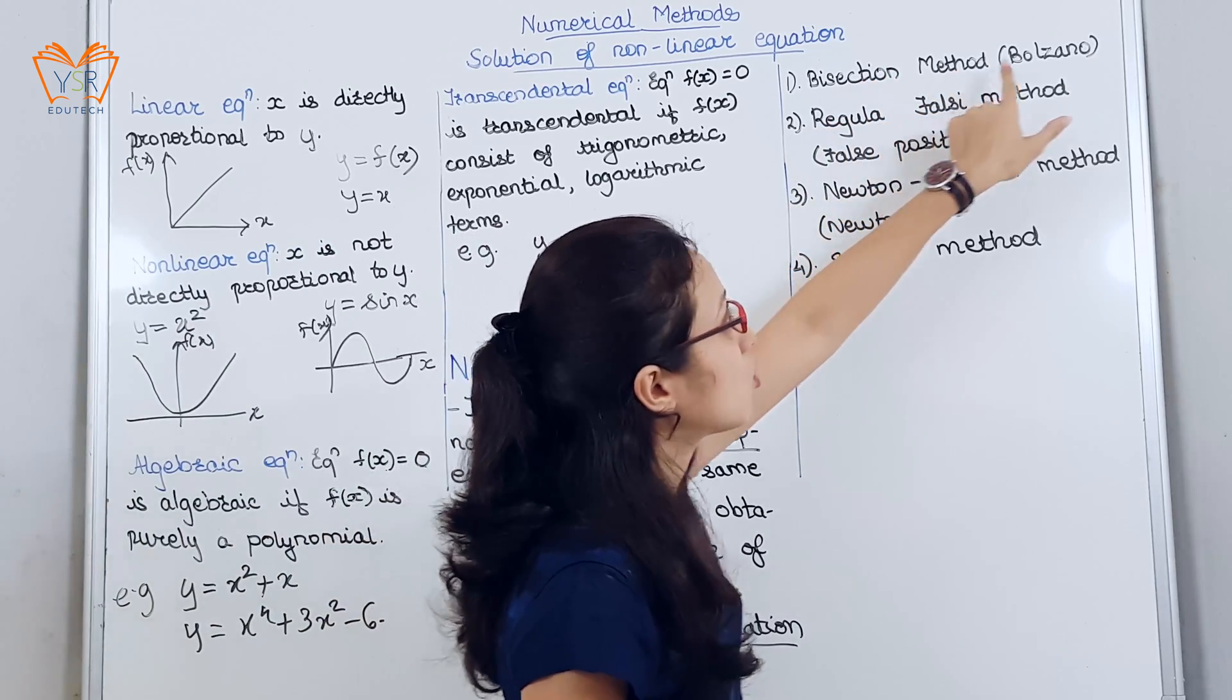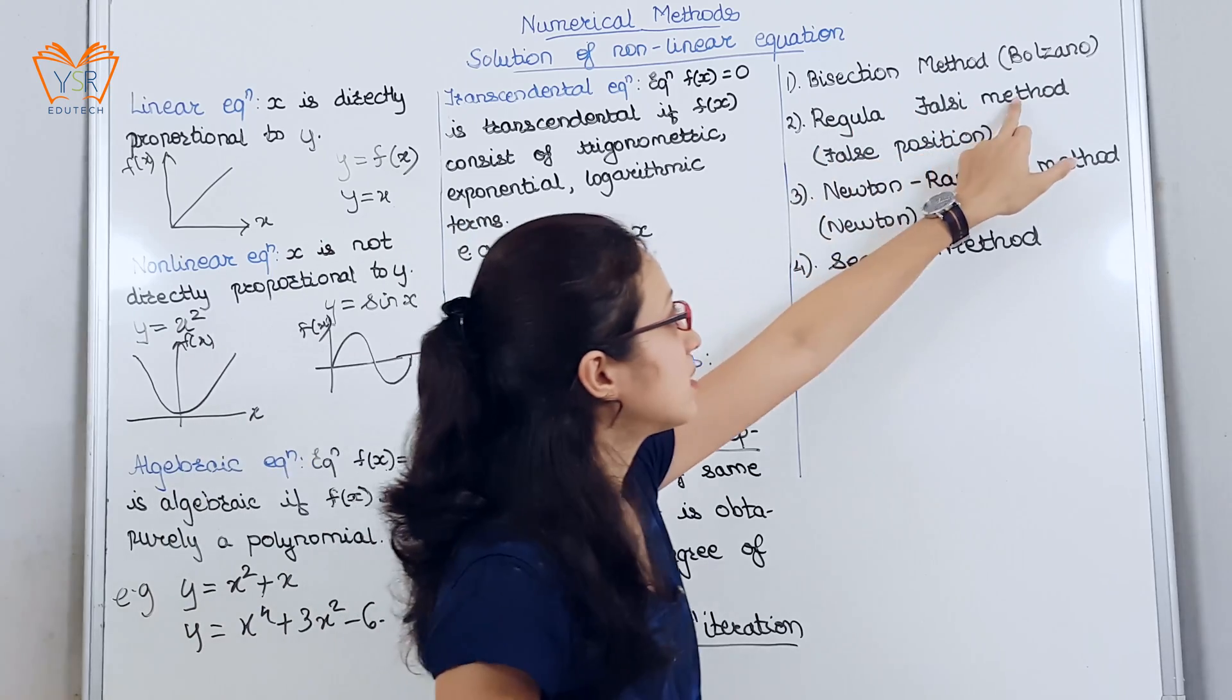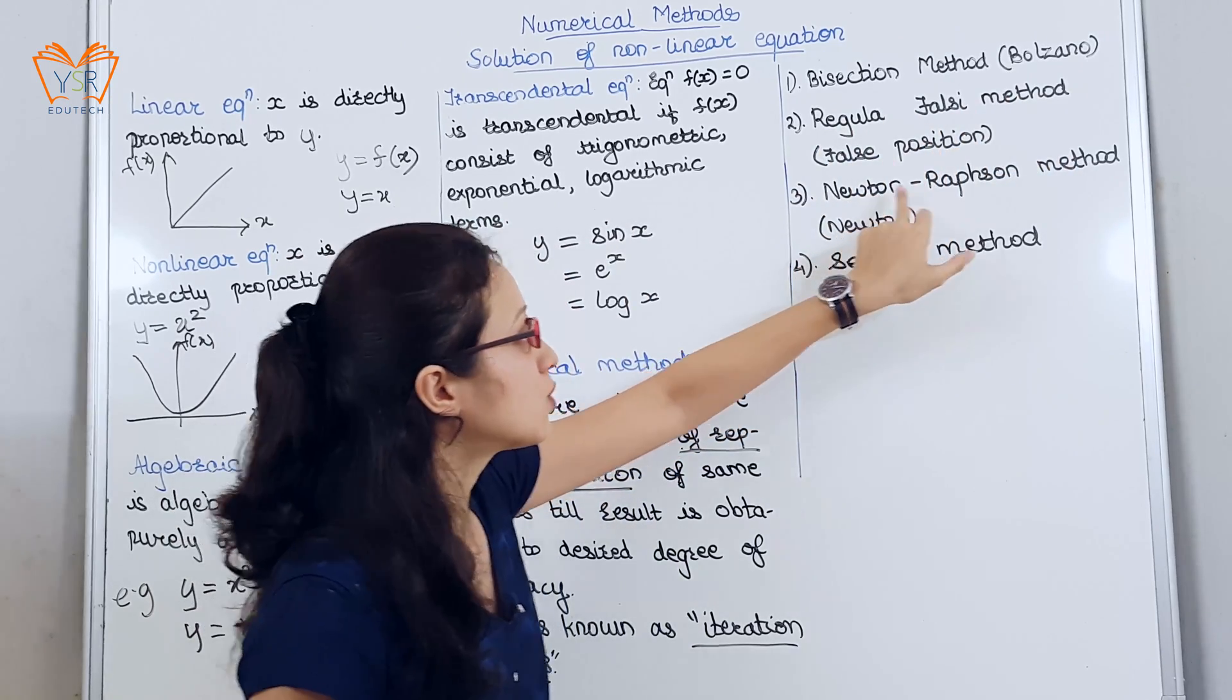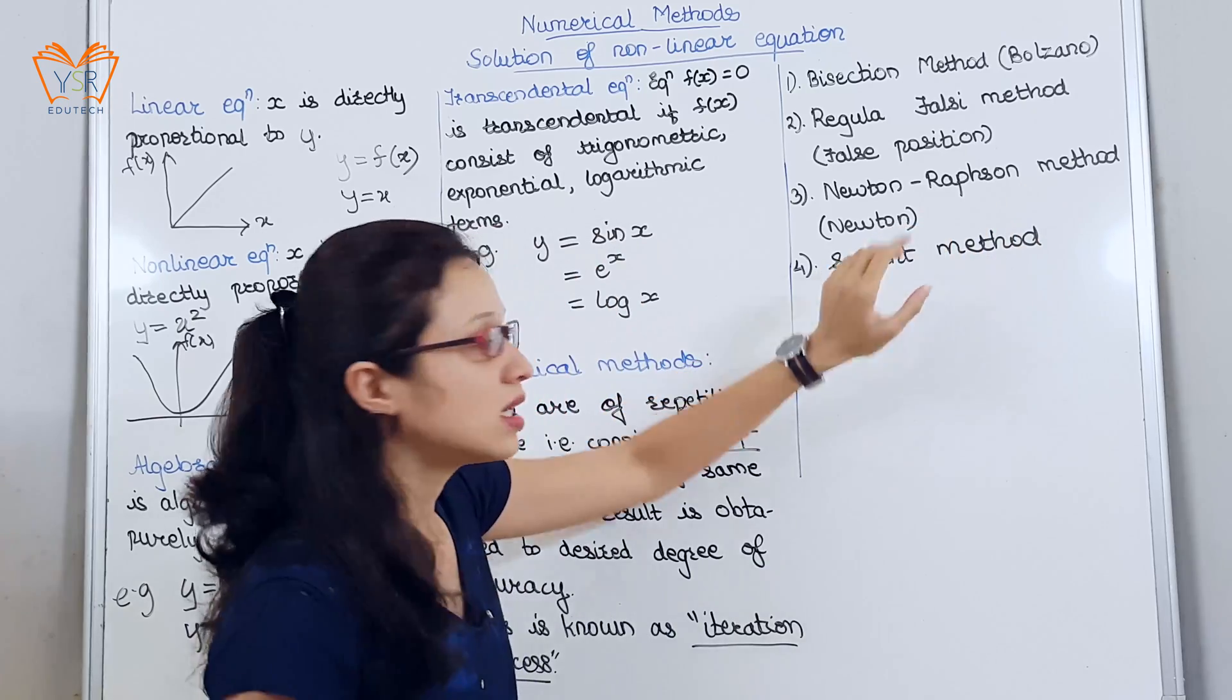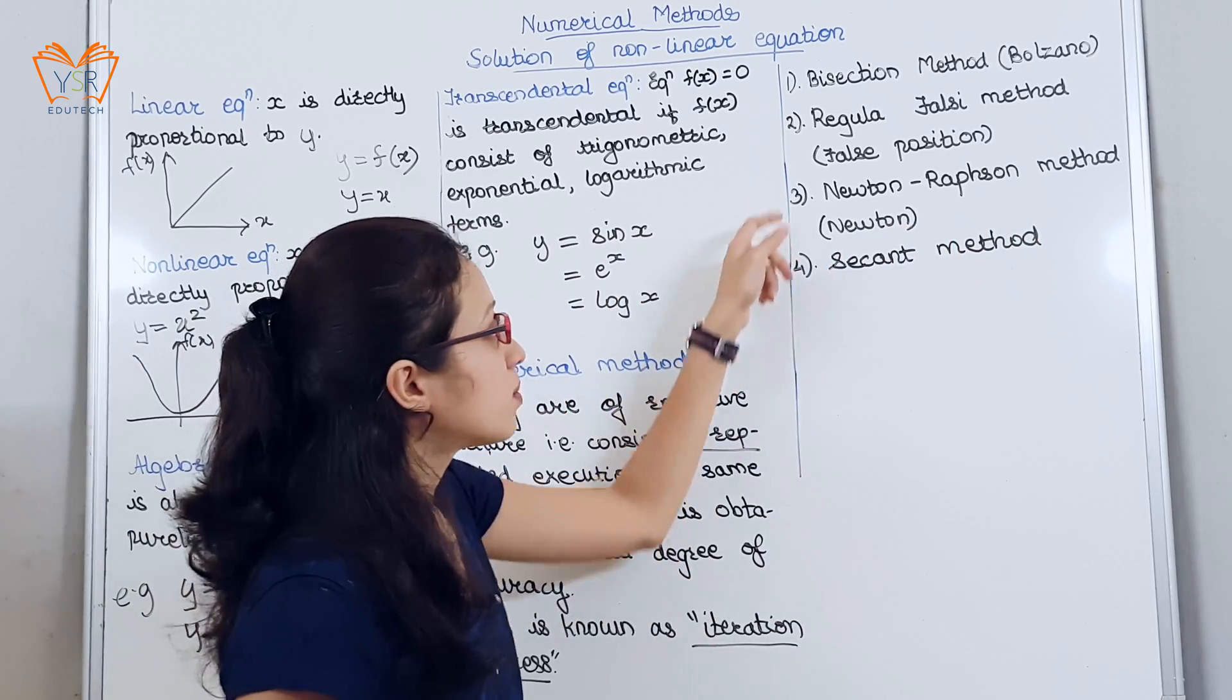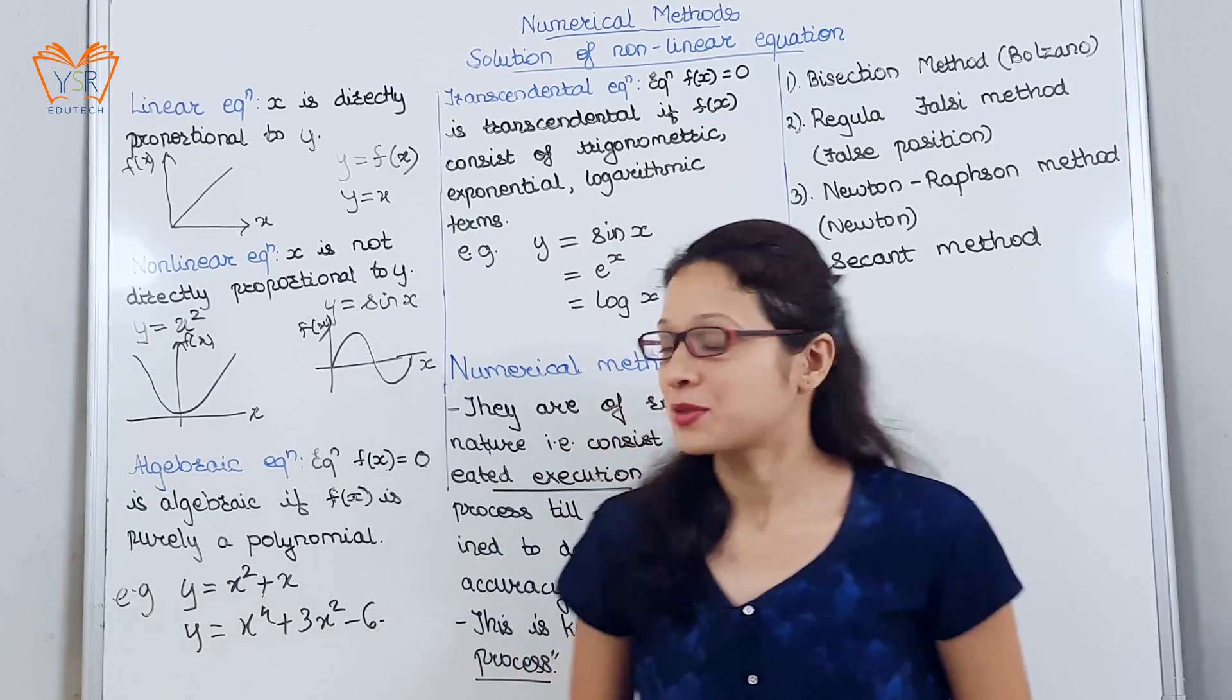First one, bisection method, also called Bolzano method. Second, regular falsi method, also called false position method. Third, Newton-Raphson method, also called Newton method. And the last one, secant method. These four methods are used to find out the approximate root of any equation.